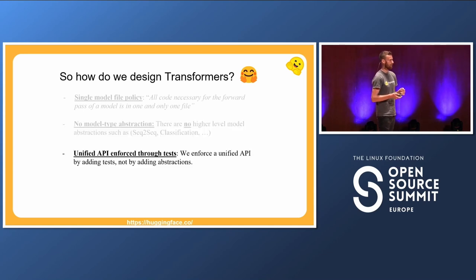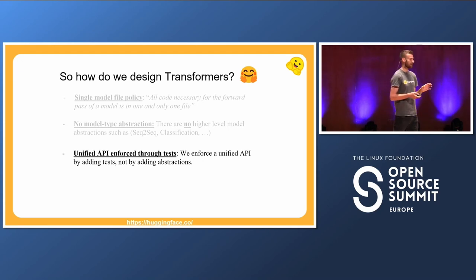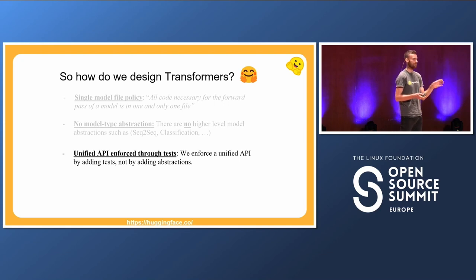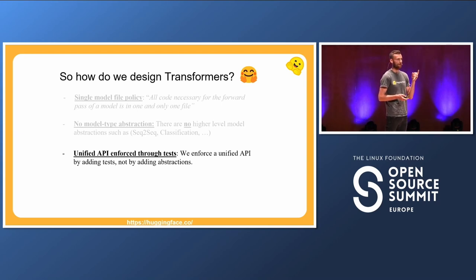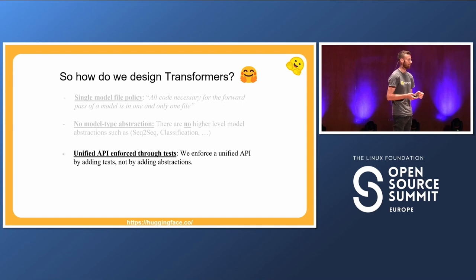A unified API is not enforced by abstractions in Transformers. A big problem with copying code is that the API of every model might differ, and that's bad — we want the same API across models. So instead of enforcing that with an abstraction, we enforce it with tests: we simply test that every model has the same API. This gives us the best of both worlds — high readability for users on one hand, and a unified API that's super important for production use cases on the other.